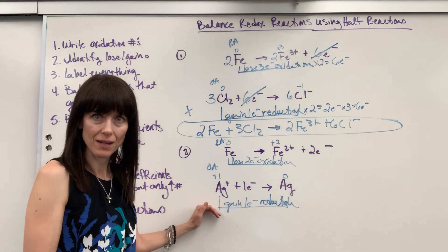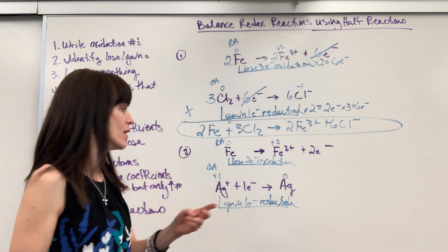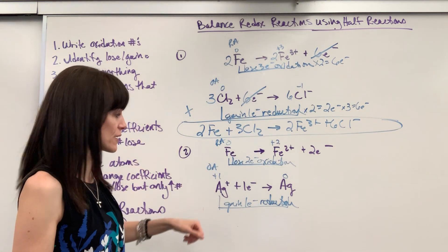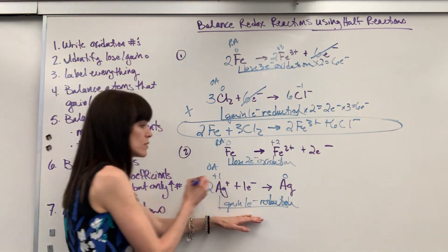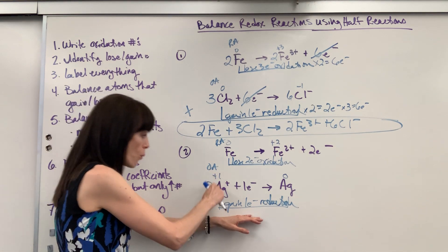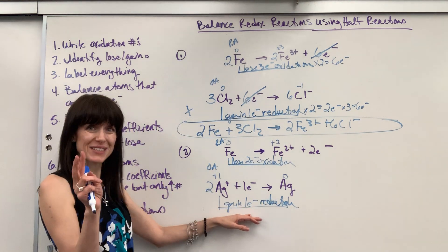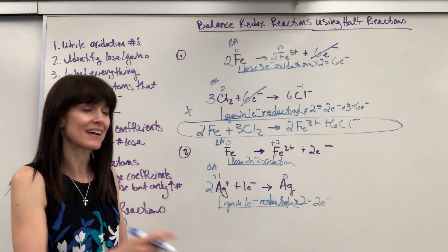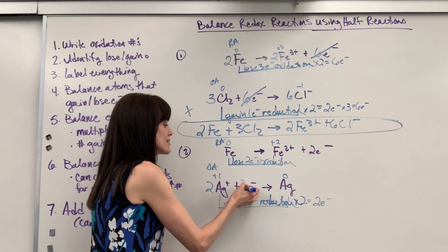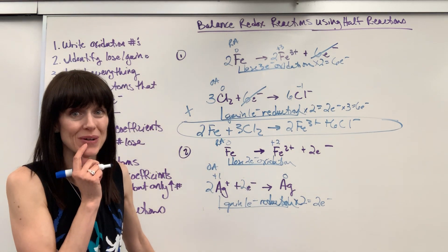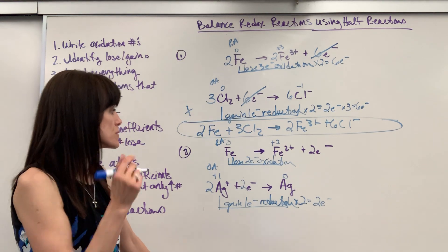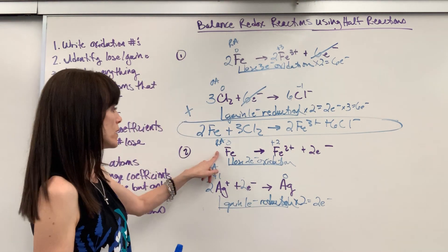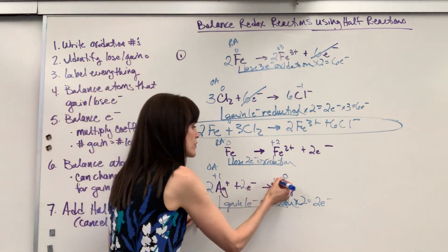Now balance the electrons: two lost, one gained. The smallest number both go into is two. Leave the iron half reaction with two electrons lost. For silver, multiply by two — two silver ions each gaining one electron gives two electrons gained. So we gain two electrons total, not one. The electrons are balanced: two lost equals two gained.